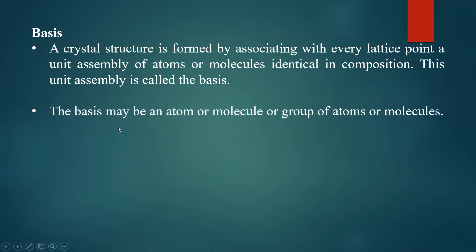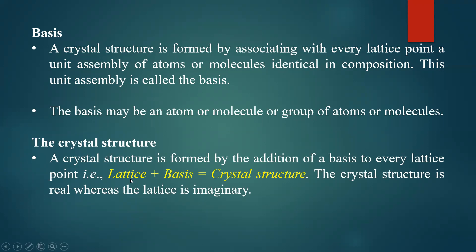The basis may be an atom, a molecule, or a group of atoms or molecules. Combining crystal lattice with basis gives crystal structure: lattice + basis = crystal structure. Crystal structure is real; crystal lattice is imaginary — just a marking for our understanding. To describe the crystal structure we identify the regular pattern and imagine the geometrical points pattern.